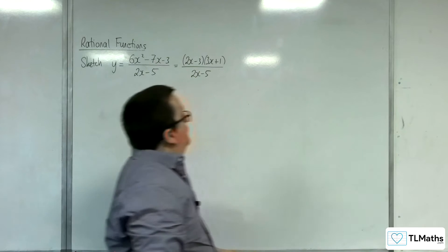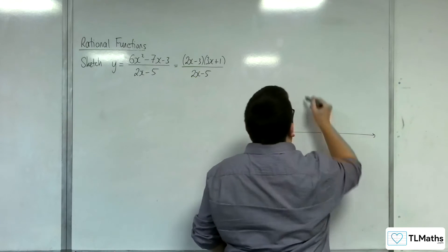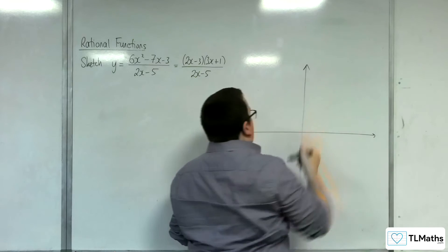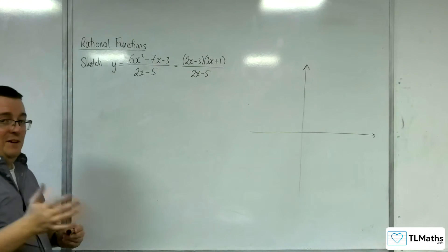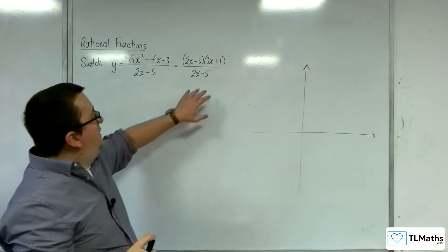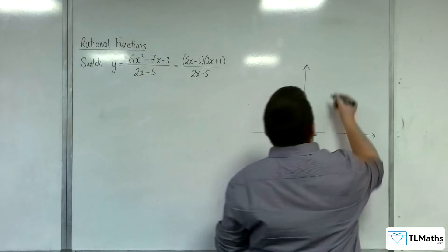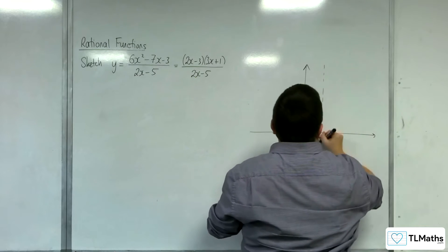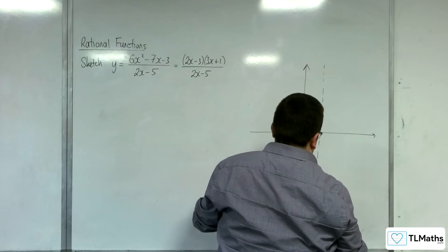So let's get on with the sketch. Where's the vertical asymptote? The vertical asymptote is where the denominator is 0, so that's at 5/2. Let's put that in first. x = 5/2.